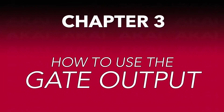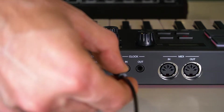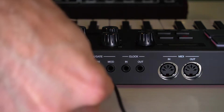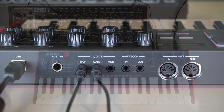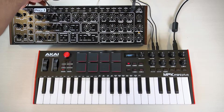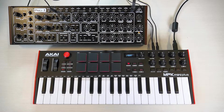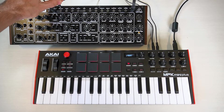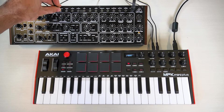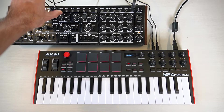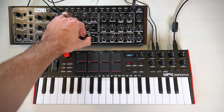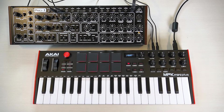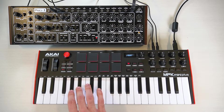Next, let's check out the gate output. Connect a TS cable between the gate output and the appropriate CV input on your external unit. Here, I'm connecting it to the gate clock input. Now, pressing keys on the keyboard will control the length of each note played through the synth.